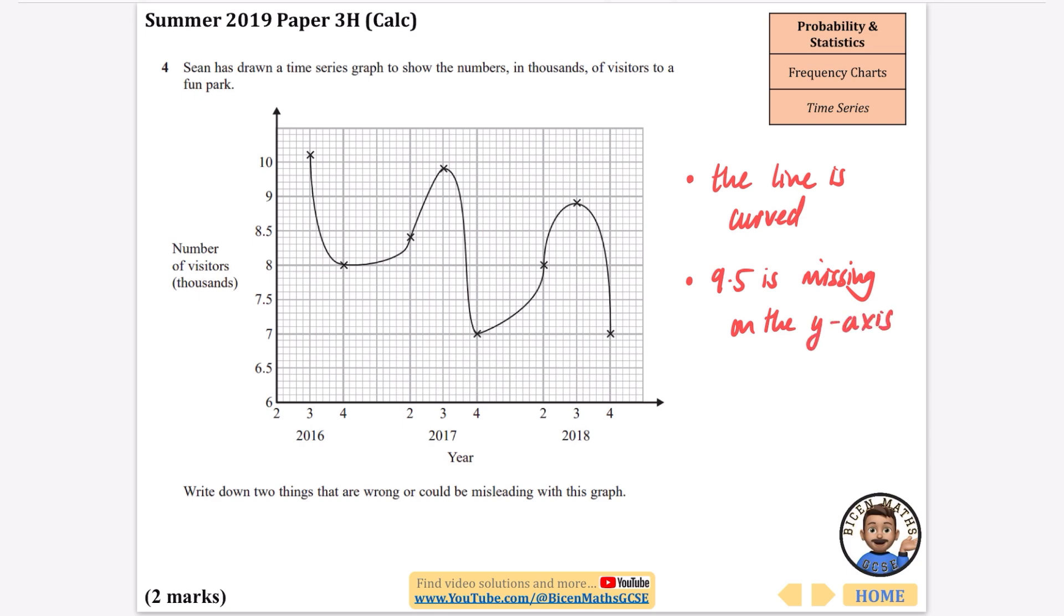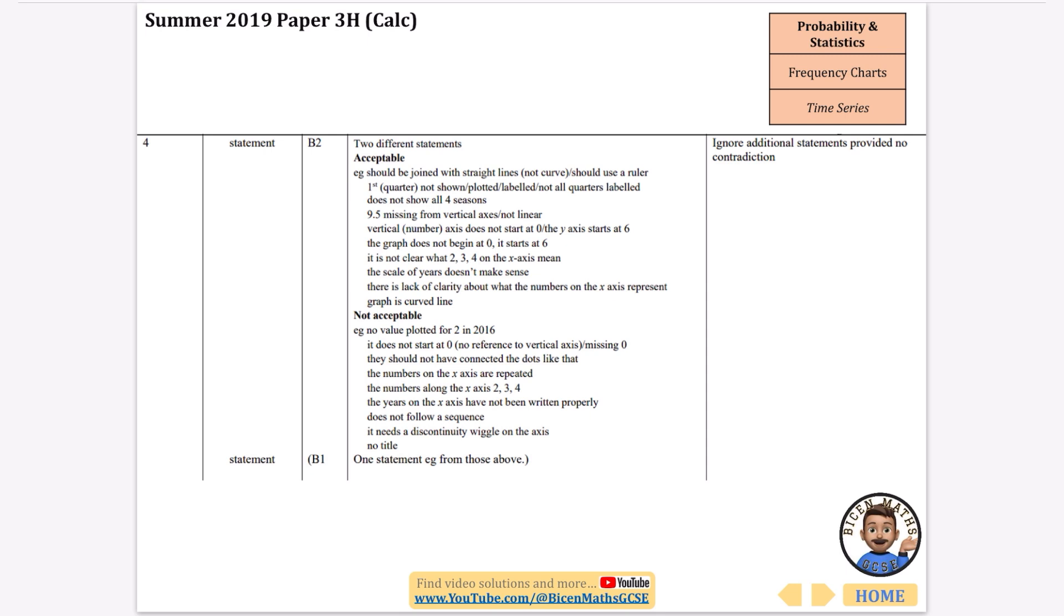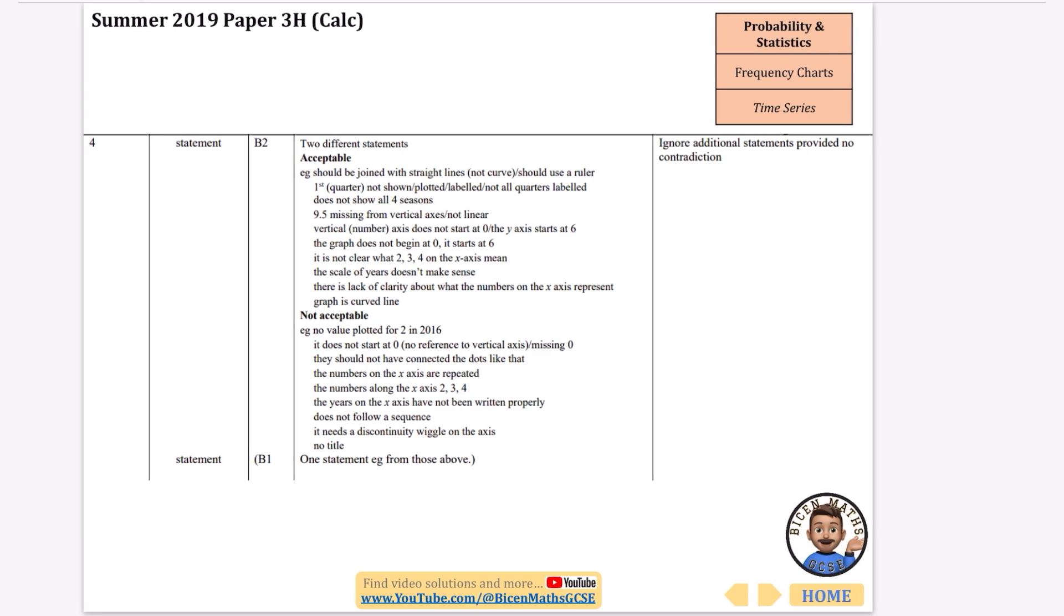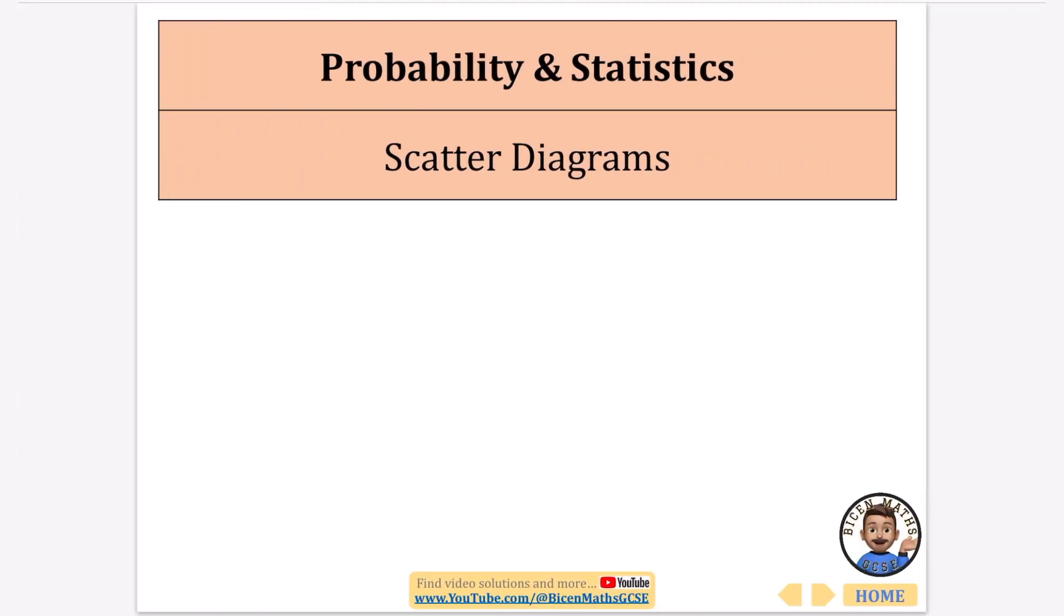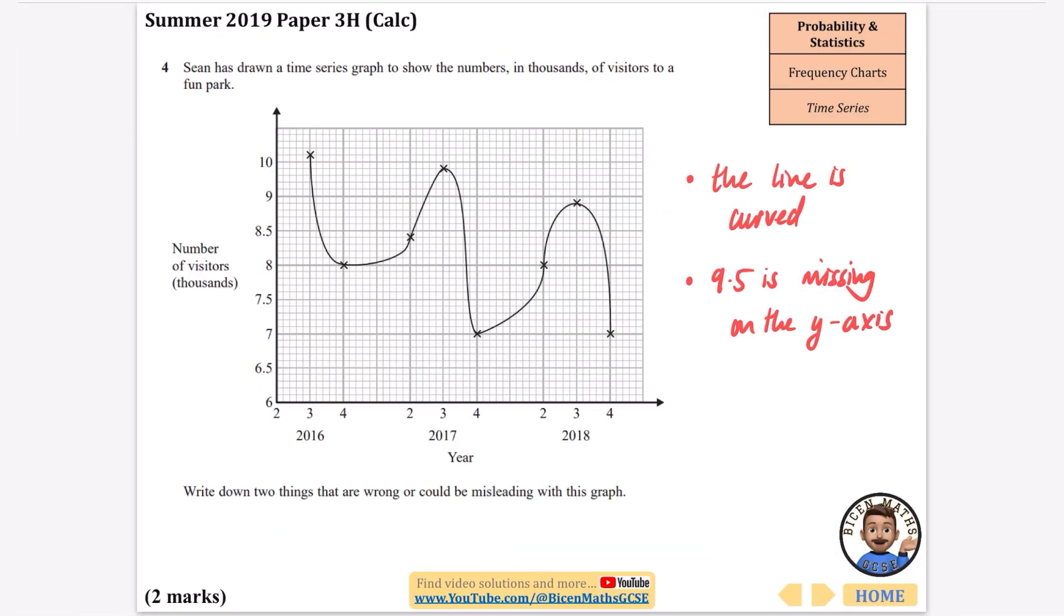So let's see if we can spot the ones we've got, the graph is a curved line, 9.5 is missing, the graph doesn't begin at 0 it starts at 6, it's not clear what 2, 3, and 4 on the x-axis mean, the scale of years doesn't make sense, wow there's loads of things they would accept there, so you can pause and just check if you've got that one right as well.